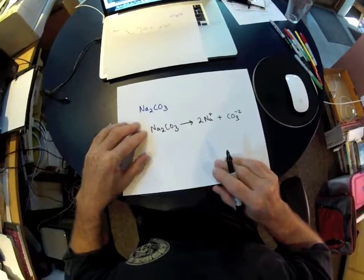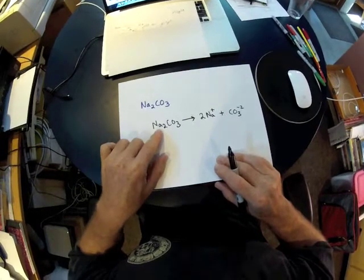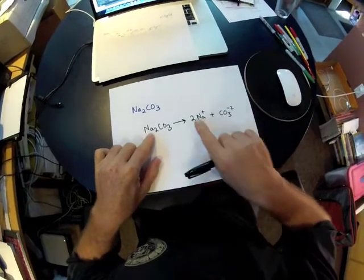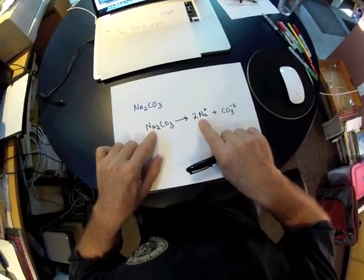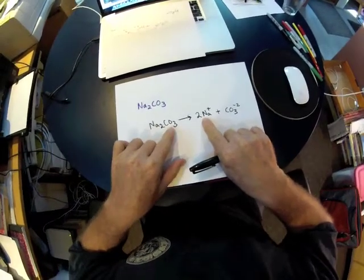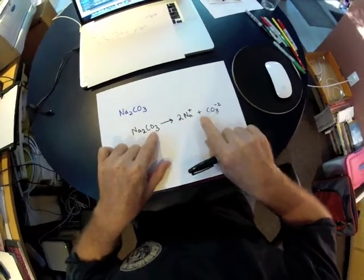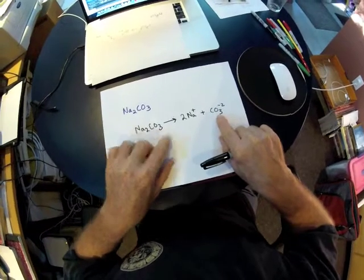It's also properly balanced: two sodiums on the left and two sodiums on the right; one carbonate on the left and one carbonate on the right.